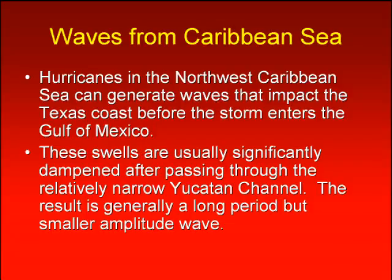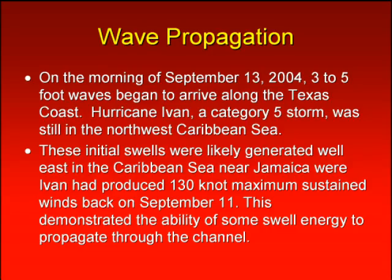These swells are usually dampened after passing through the relatively narrow Yucatan channel. On the morning of September 13th of 2004, three to five foot waves began to arrive along the Texas coast. Hurricane Ivan, a category five storm, was still in the Northwest Caribbean Sea. These initial swells were likely generated well east in the Caribbean Sea near Jamaica, where Ivan had produced 130 knot maximum sustained winds a few days earlier. This demonstrates the ability of some swell energy to propagate through the channel and into the Gulf of Mexico.